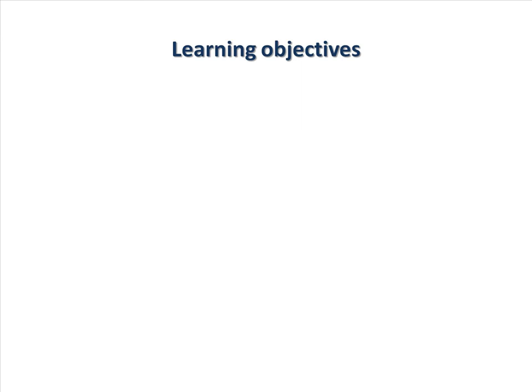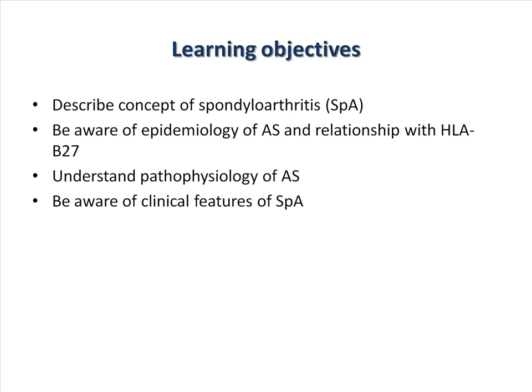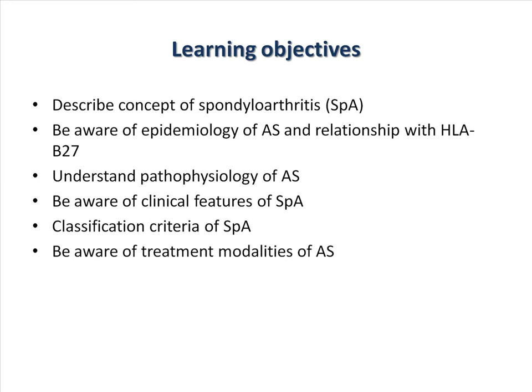The learning objectives of today are to describe the concept of spondyloarthritis, be aware of the epidemiology of ankylosing spondylitis and relationship with HLA-B27 gene, to understand the pathophysiology of ankylosing spondylitis, and be aware of the clinical features of spondyloarthritis, the classification criteria, as well as the treatment modalities for ankylosing spondylitis.